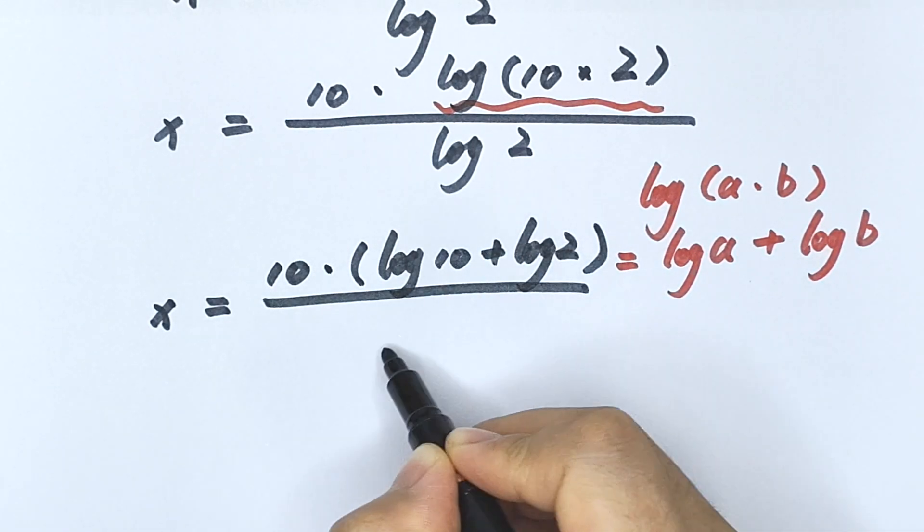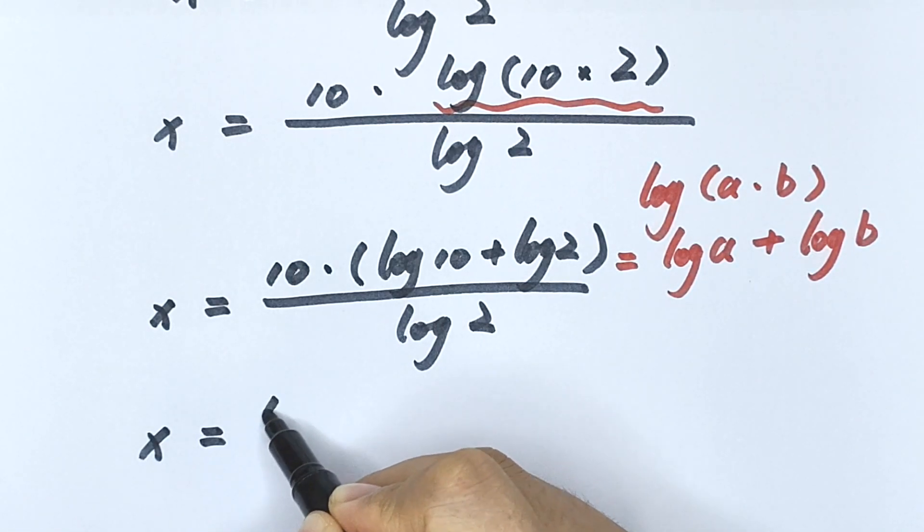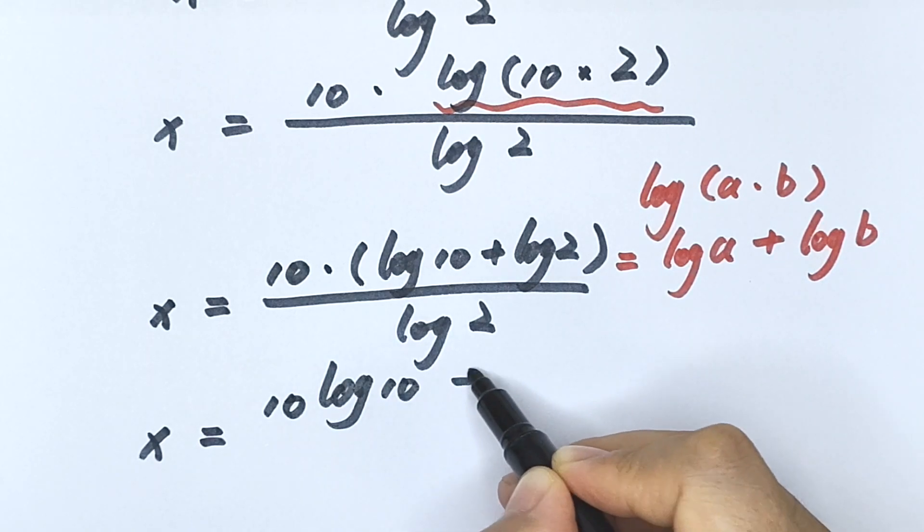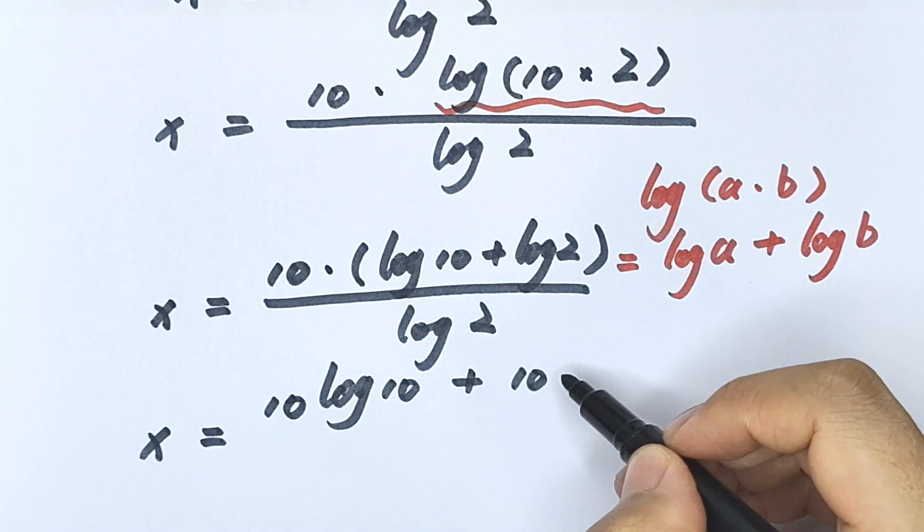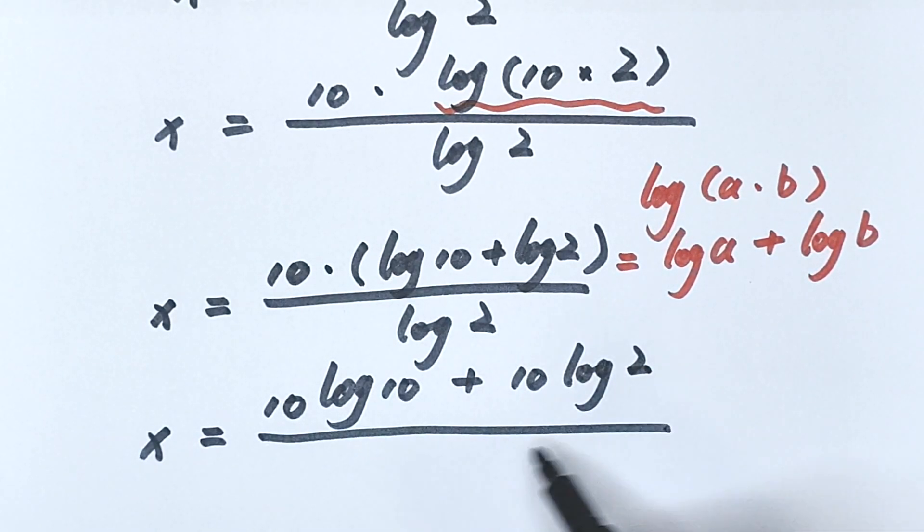Divided by log 2. Now we open the bracket, so x equals 10 times log 10 plus 10 times log 2, divided by log 2.